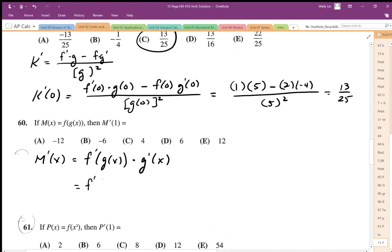So first thing is, I need to find, I'm going to evaluate m, the derivative at 1. So that means I need the g at 1, and that will establish my input variable to calculate the f prime part of it, and I need the g prime at 1.